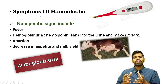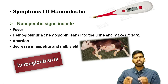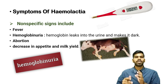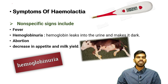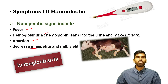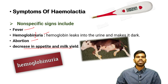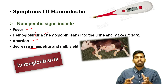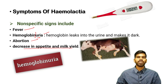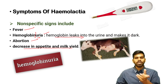What are the symptoms of Hemolactia? The first and major symptom is the presence of blood in milk — reddish or pinkish discoloration of milk. Some other non-specific signs include fever, hemoglobinuria, abortion, and decrease in appetite and milk yield. Hemoglobinuria — split the word: hemoglobin is a blood-carrying protein that gives blood its red color, and uria means urine. Hemoglobin leaks into urine and makes it dark or reddish in color.